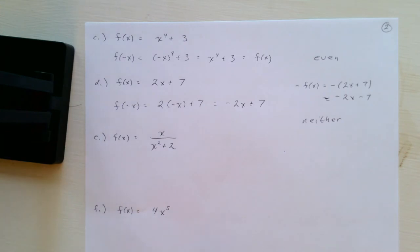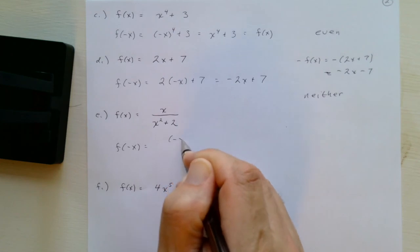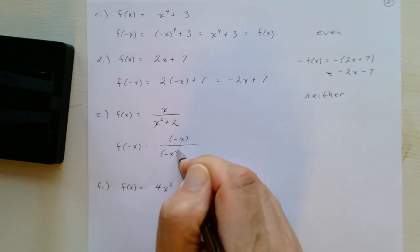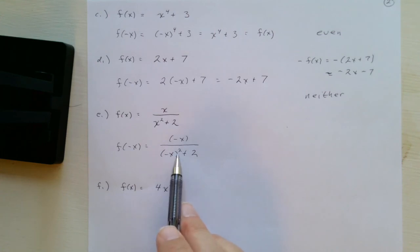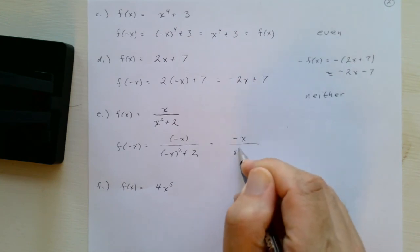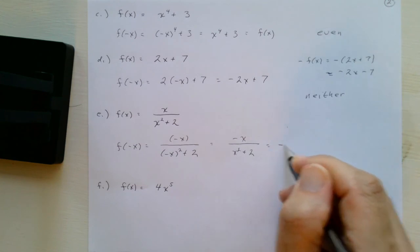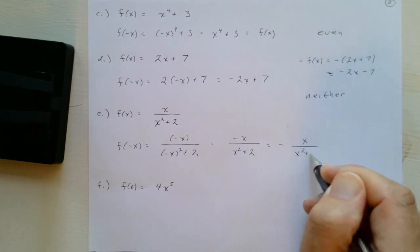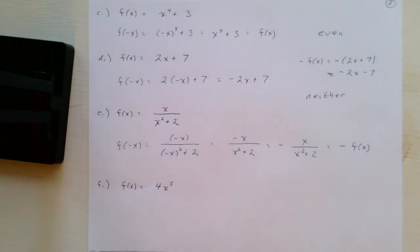For f(x) = x/(x² + 2), f(−x) = (−x)/((−x)² + 2) = (−x)/(x² + 2). Since there's only one term in the numerator, we can factor out the minus sign, giving −[x/(x² + 2)] = −f(x). So this function is odd.